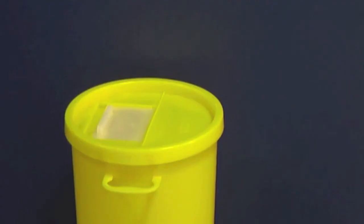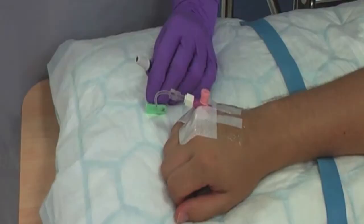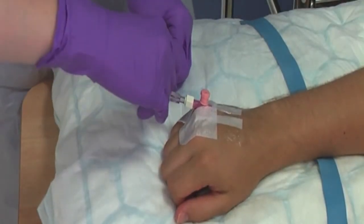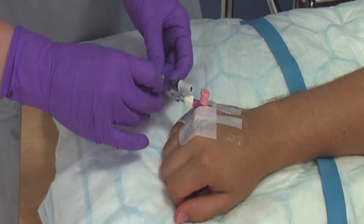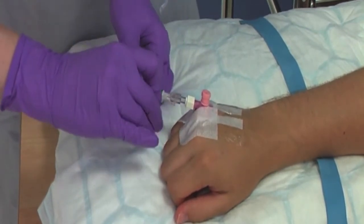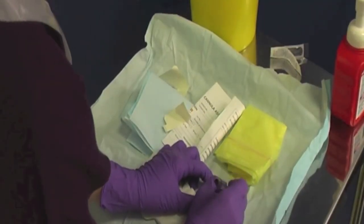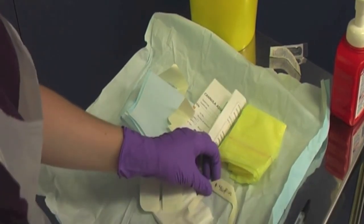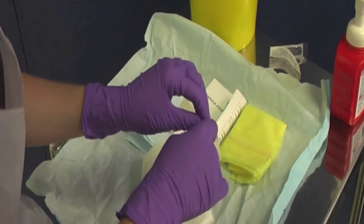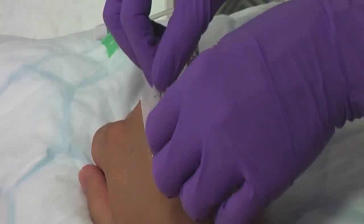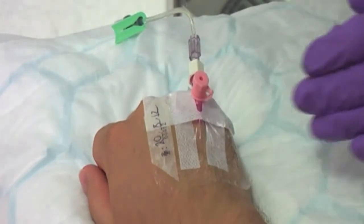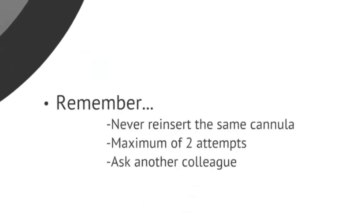Remove the syringe and dispose into the sharps bin. Clamp the bionector and dispose of the tourniquet. Ensure that you document the date of insertion using the sticker provided on the dressing and place next to the cannula site. Remember, if your attempt at cannulation is unsuccessful, you should restart the whole process from the beginning. Never reinsert the same cannula into a patient. You can have a maximum of 2 attempts and then you must ask another colleague to perform the procedure.